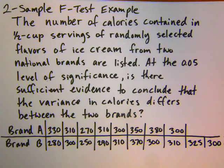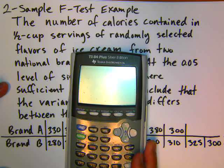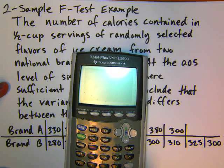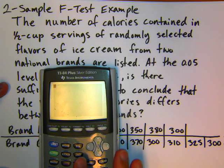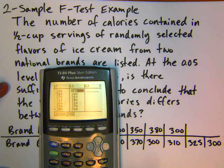You have two datasets for brand A and brand B. Plug in your datasets into list 1 and list 2. I have those already here. I'm going to use the TI-84, very similar for the other style of TI calculators. Go to your stat app, into edit, and then enter your list.